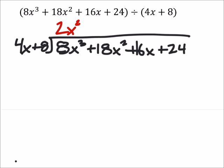Now what happens is I have that 2x squared. It's 2x squared times 4x. So I'm going to show that over here. 2x squared times 4x. What would that give us? Yeah, that would give us 8x cubed, right?